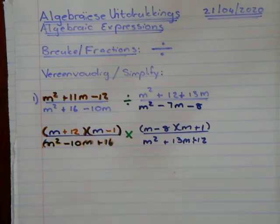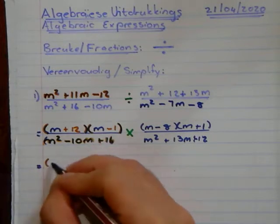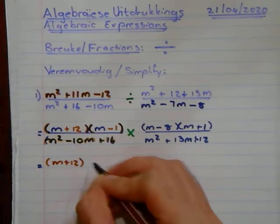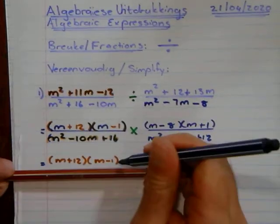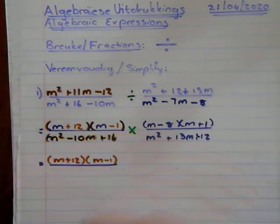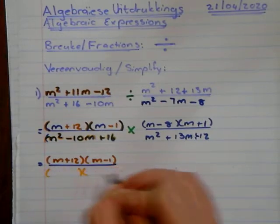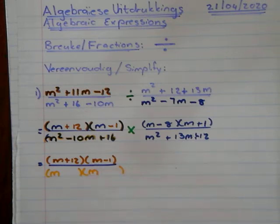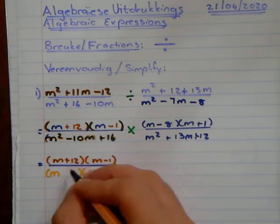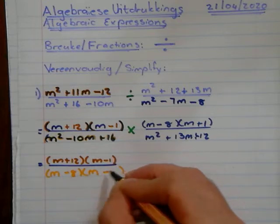Now we're going to factorize this one at the bottom. It's 10 and 16, so we're going to have M and M.